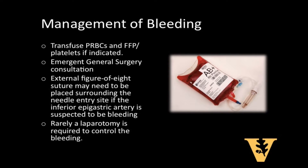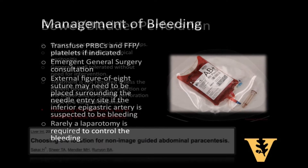Packed red blood cells should be given to replace any intravascular losses, and coagulopathies should be reversed with FFP and platelets. Emergency general surgery consultation should be placed emergently as well. An external figure-of-eight suture may need to be placed surrounding the needle entry site if the inferior epigastric artery is suspected to be bleeding, and rarely a laparotomy is required to control the hemorrhage.